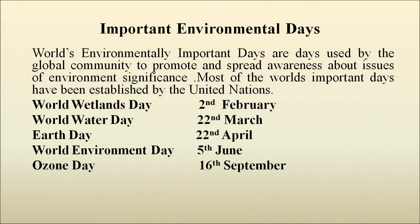World Environment Important Days are days used by the global community to promote and spread awareness about issues of environmental significance. Most of the world's important days have been established by the United Nations and are celebrated by many schools, colleges, and institutes. Some key dates are: World Wetland Day on 2nd February, World Water Day on 22nd March, Earth Day on 22nd April, World Environment Day on 5th June, and Ozone Day on 16th September.